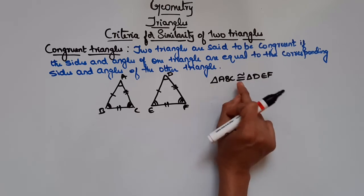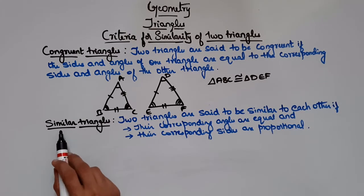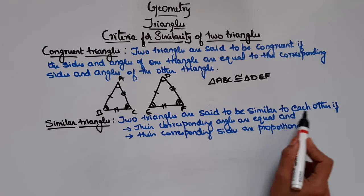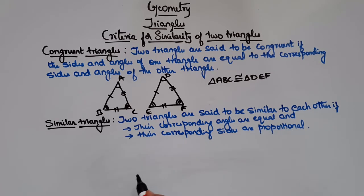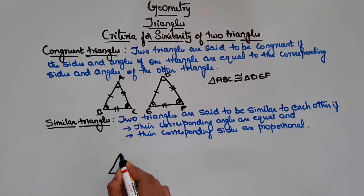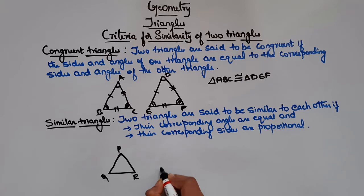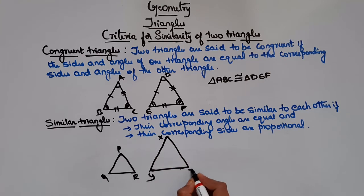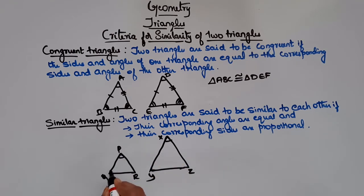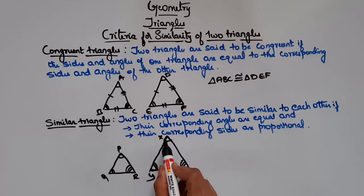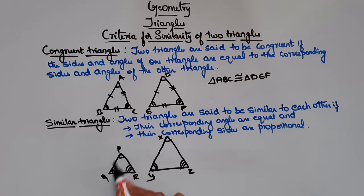Now let's see what similar triangles are. Two triangles are said to be similar to each other if their corresponding angles are equal and their corresponding sides are proportional. Let's consider two triangles: triangle PQR and triangle XYZ. These two triangles are said to be similar if angle P is equal to angle X, angle Q is equal to angle Y, and angle R is equal to angle Z.